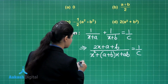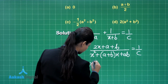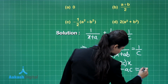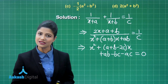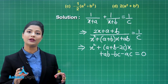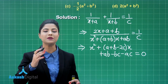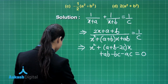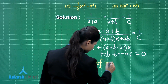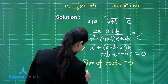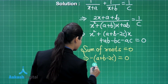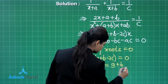Further simplifying gives the quadratic equation: x squared plus (a plus b minus 2c)x plus (ab minus bc minus ac) equals 0. Since the sum of the roots equals 0, using the formula minus b over a we get minus(a plus b minus 2c) equals 0, which gives c equal to (a plus b) upon 2.